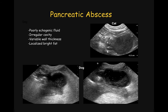Pancreatic abscess may appear as poorly echogenic fluid collection without or with variable thickness of a wall, often surrounded by hyperechoic fat. This collection of fluid may be adjacent to the pancreas or within the pancreas as we see in this cat. Fine needle aspiration to drain part of this fluid is necessary to make the difference between a pseudocyst and an abscess. This distinction is important as pancreatic abscess will require surgical intervention.